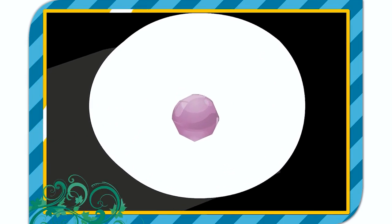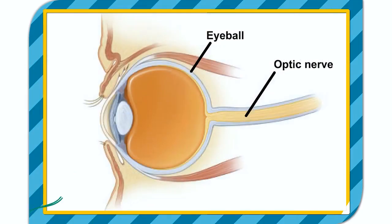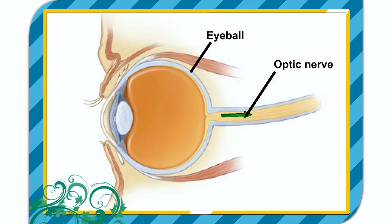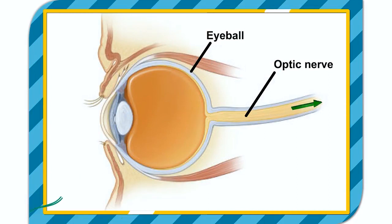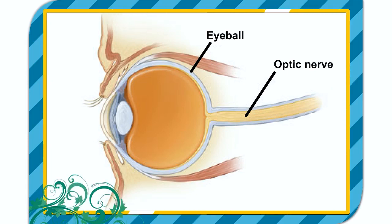An inverted image is formed on the retina which acts as the screen of the eye. The rods and cones send electrical signals through the optic nerve to the brain. The brain interprets these signals and makes us see the erect image of the object. No rods and cones are present at the junction of the optic nerve and retina so no vision is possible there. It is called the blind spot of eye.